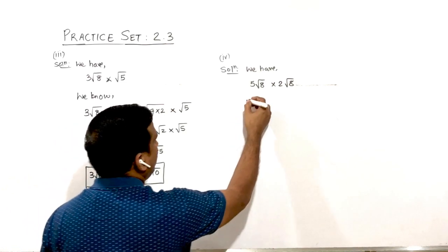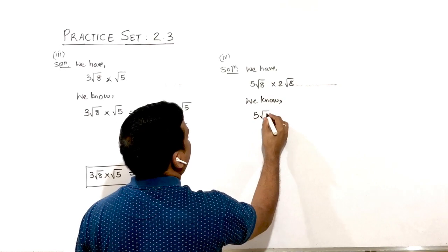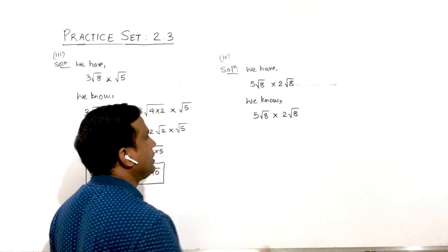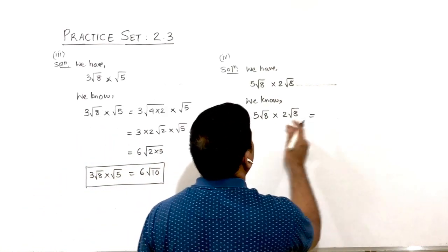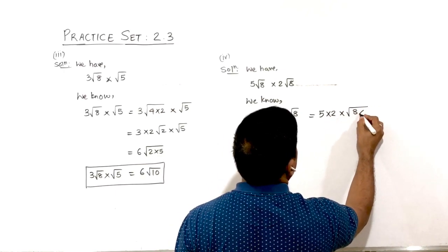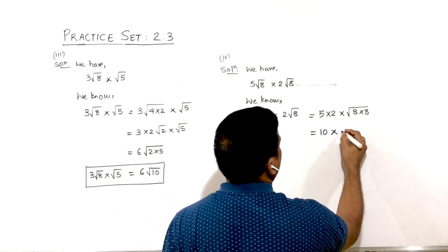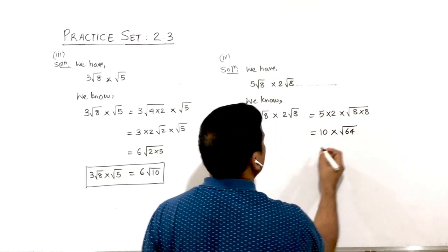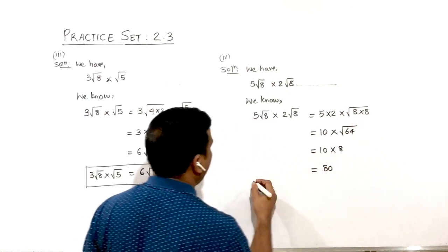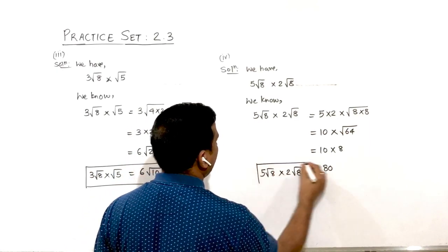Similarly, for the fourth one: 5√8 × 2√8. Both are like surds. Multiply: 5 × 2 = 10, and √8 × √8 = 8, so 10 × 8 = 80. Therefore 5√8 × 2√8 = 80.